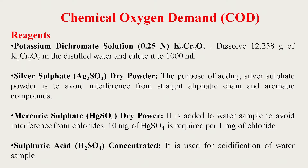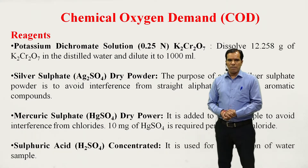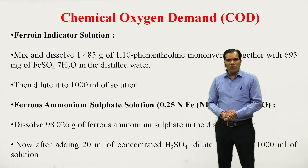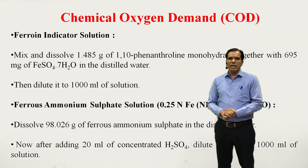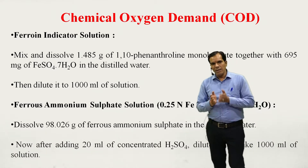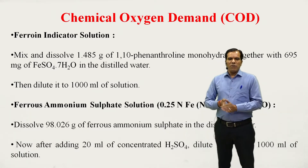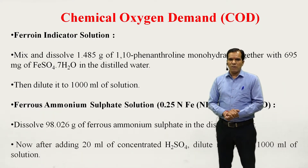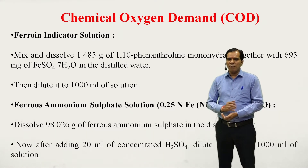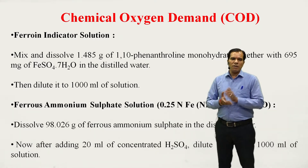Concentrated sulfuric acid is used for acidification of the water sample. Ferroin indicator solution is used in this experiment. Ferroin indicator is prepared with 1.485 grams of 1,10-phenanthroline monohydrate and 695 milligrams of ferrous sulfate in distilled water, then diluted to 1000 ml.